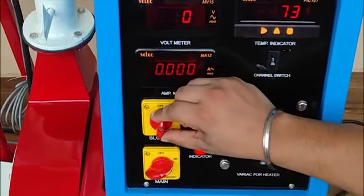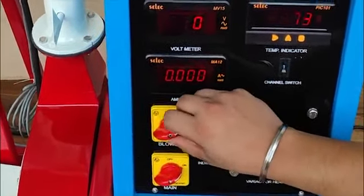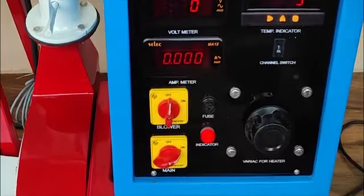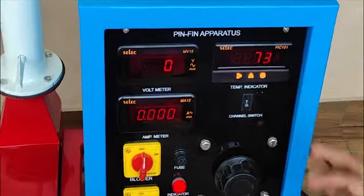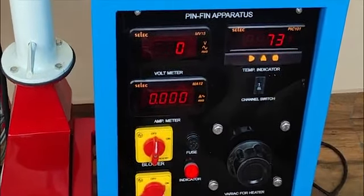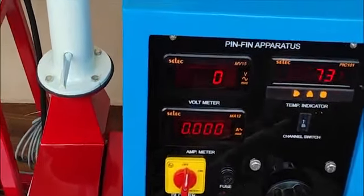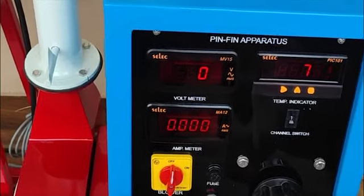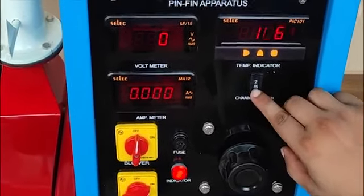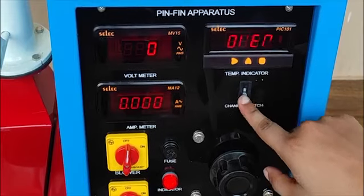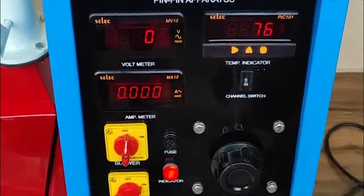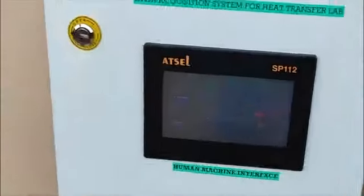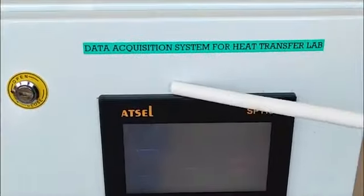We can start the blower of the motor. Thermocouple sensors are installed. Five on the pin and one around the field measuring the air temperature. So T1, T2, T3, T4, T5 and T6. Now our apparatus can be connected to this data acquisition system.